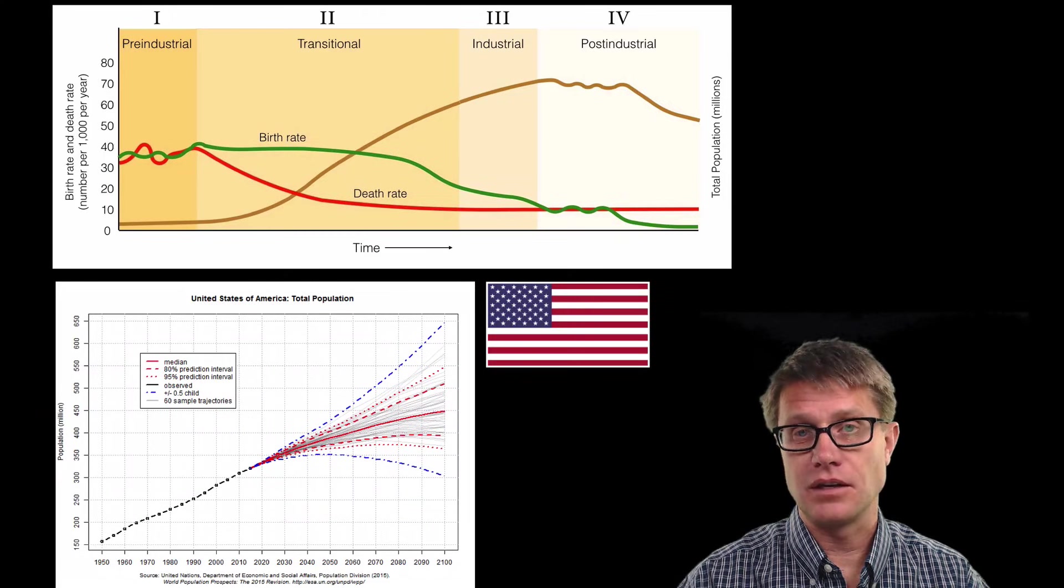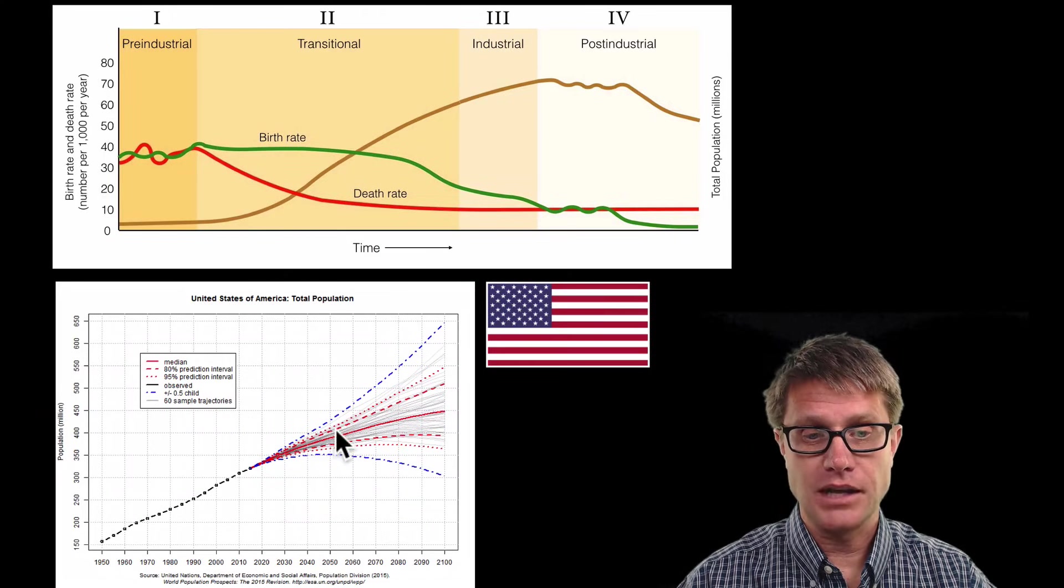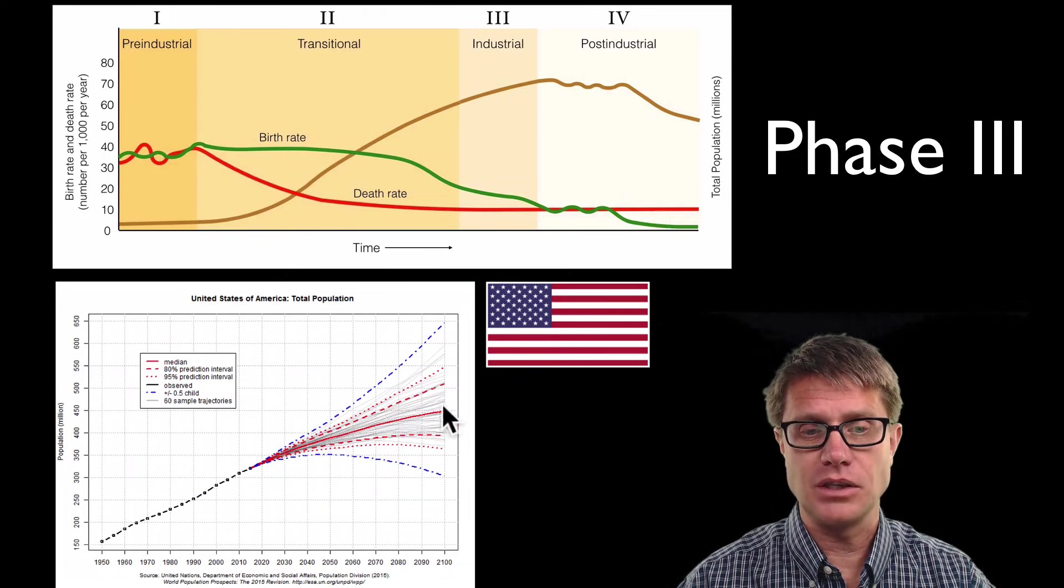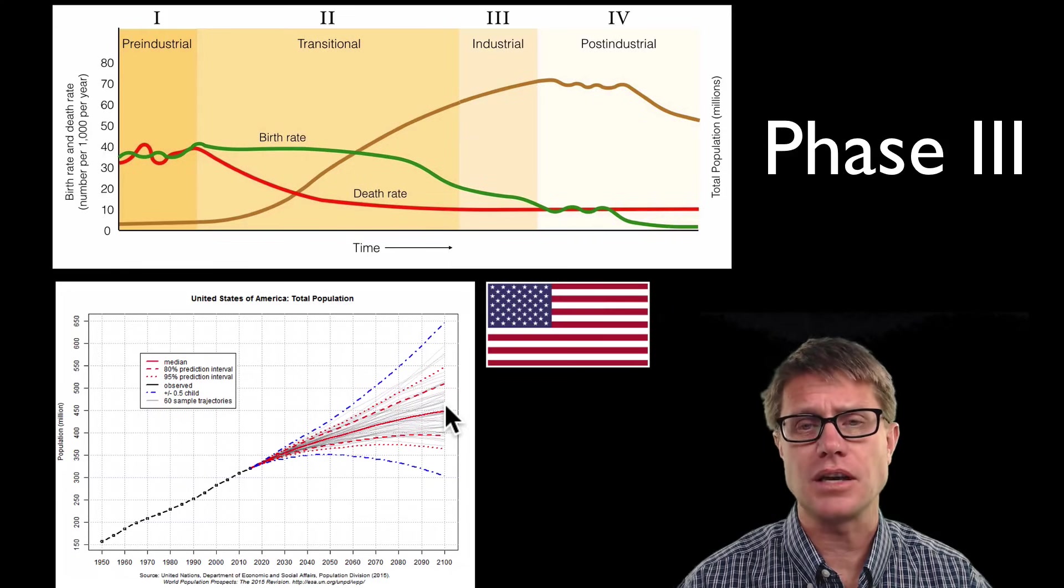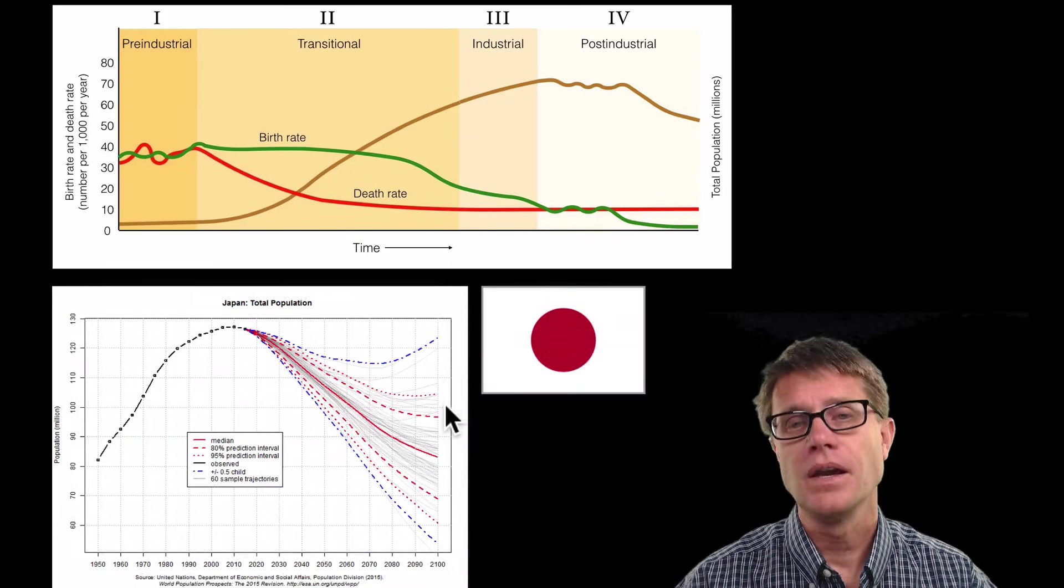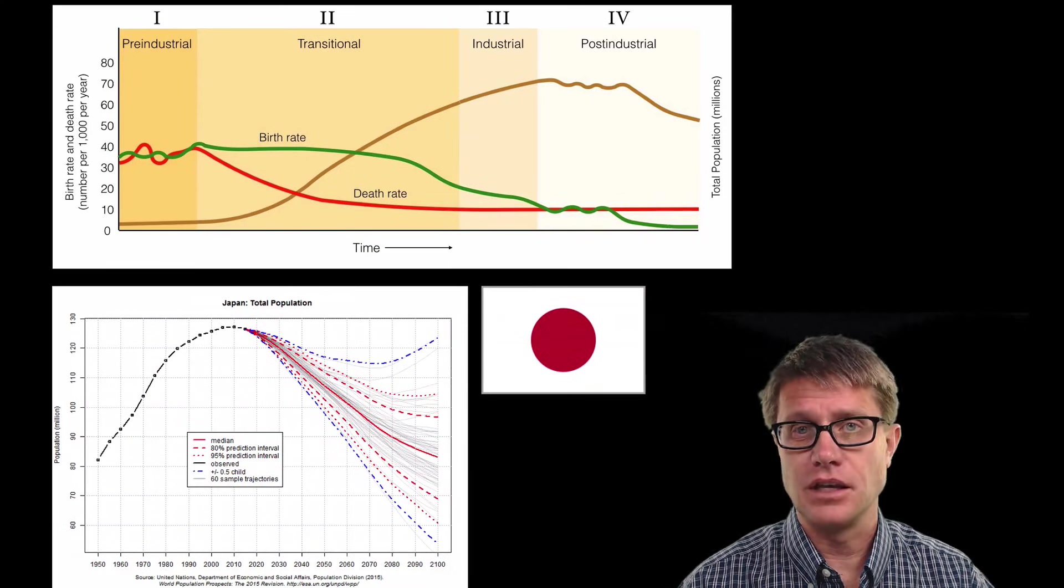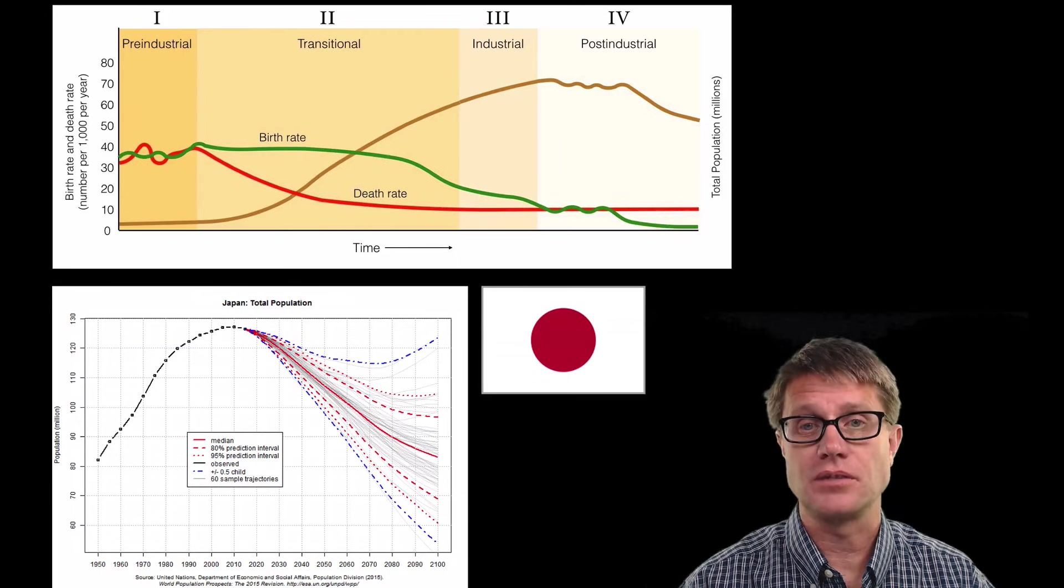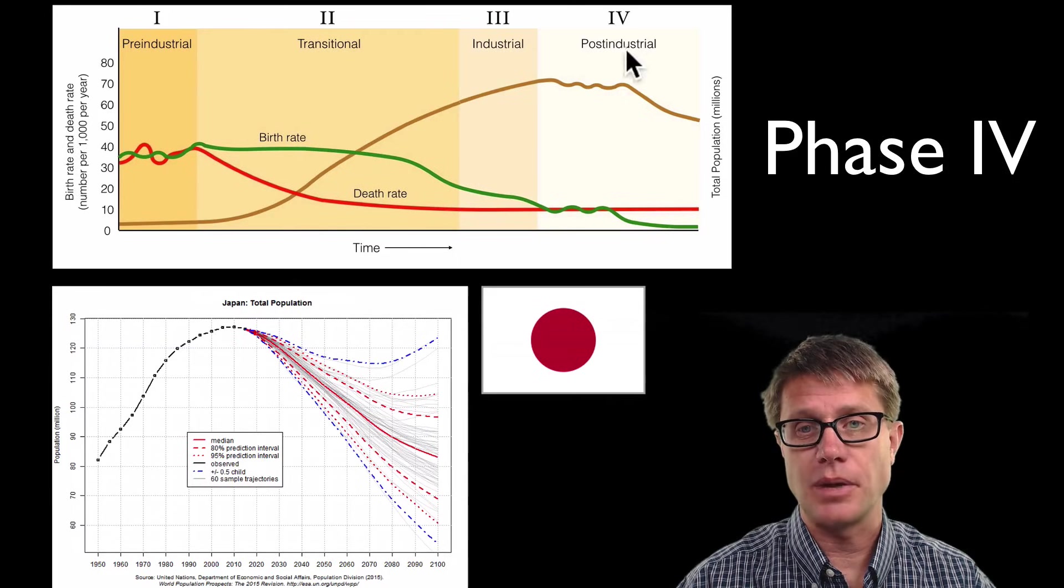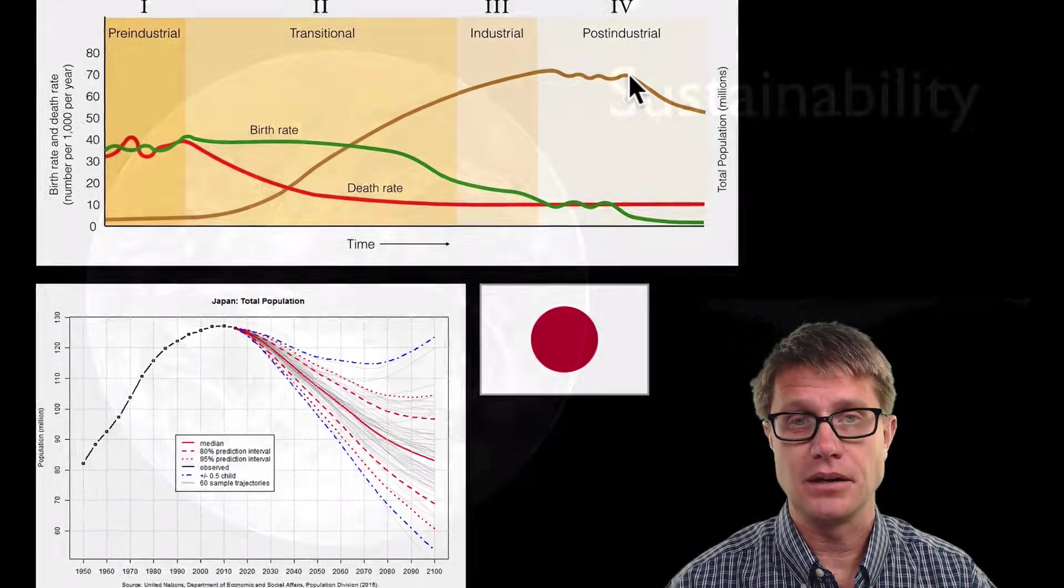If we look at the US you can see into the future it is going to stabilize. If we look at birth and death rates it should be stable. But we have a lot of immigration coming into the US. And then if we look at Japan you can see that into the future the population in Japan is radically going to drop off. And so we would put Japan in this phase 4 right here.